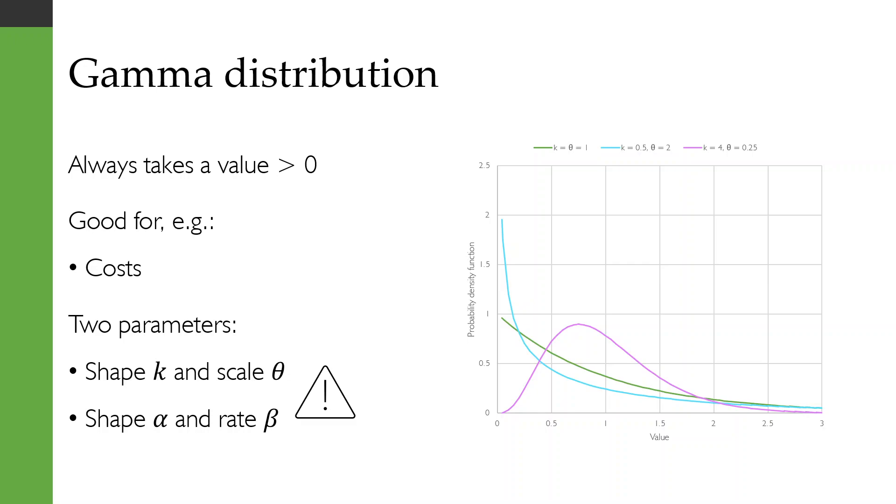The gamma distribution is quite similar to the log normal distribution in that it always takes a value greater than zero, which again makes it good for things like costs.